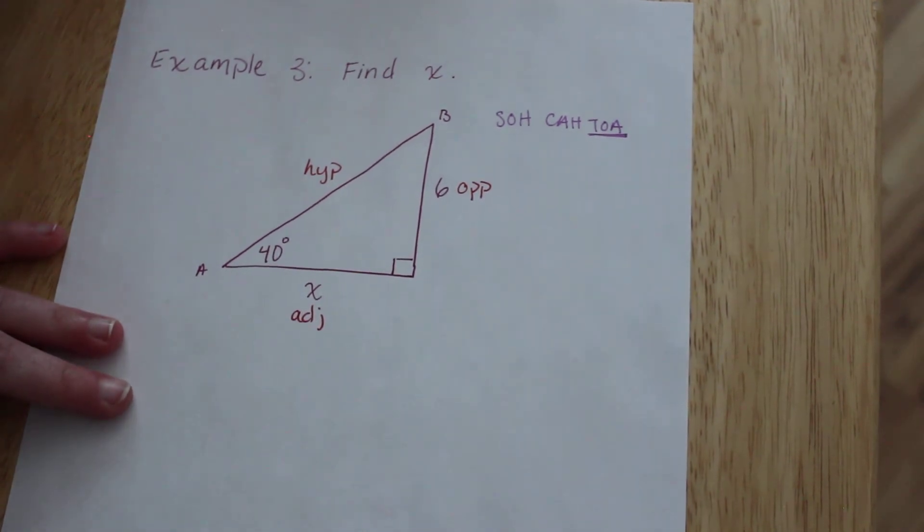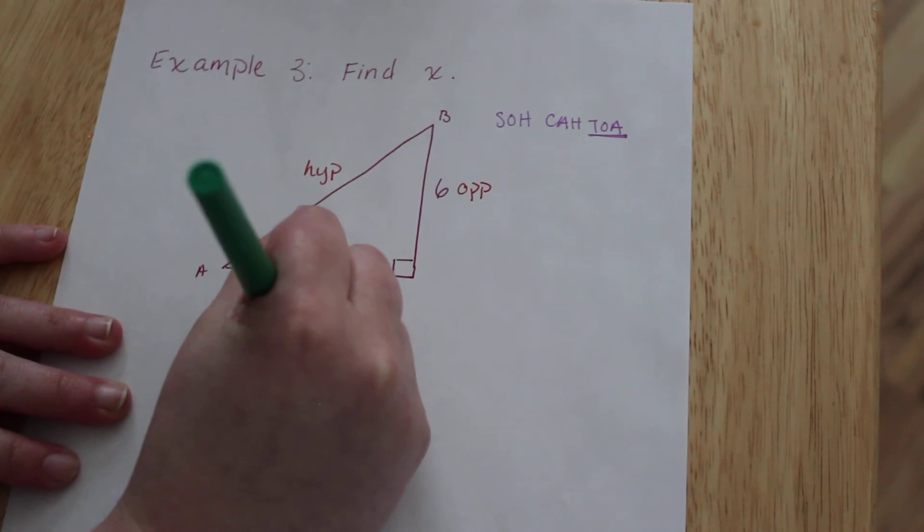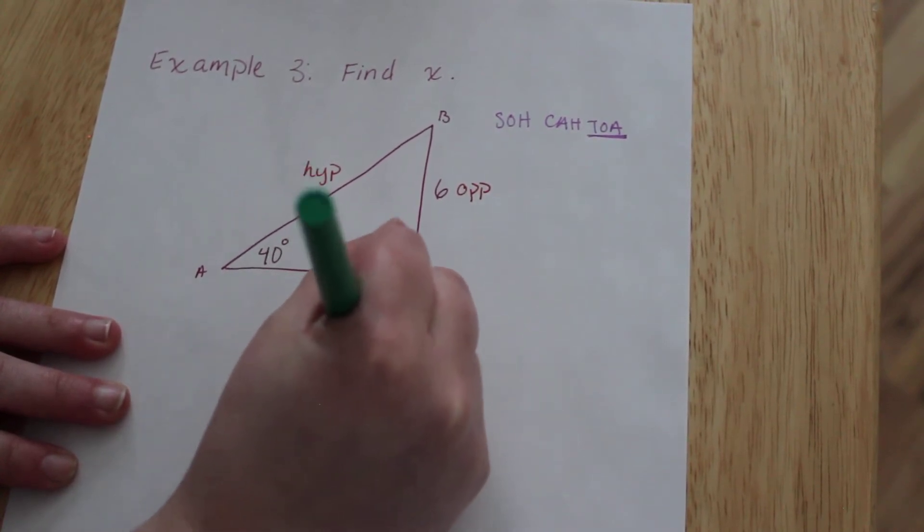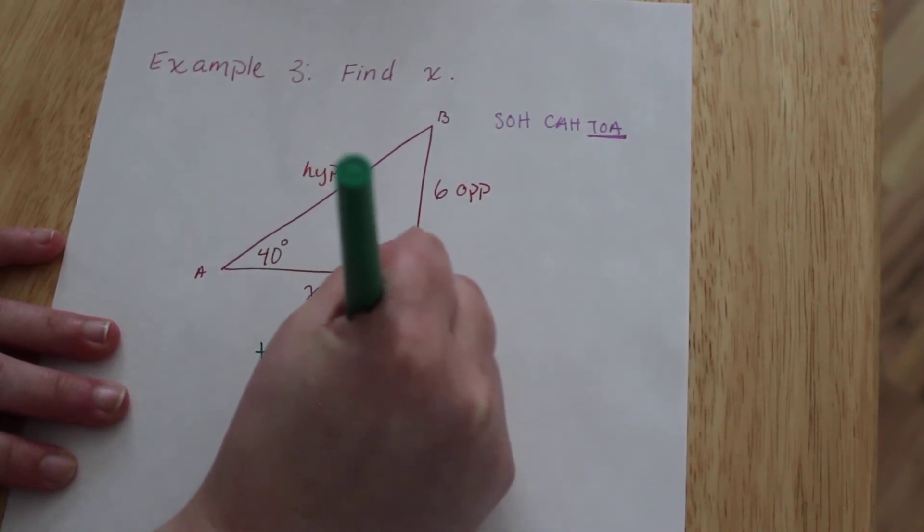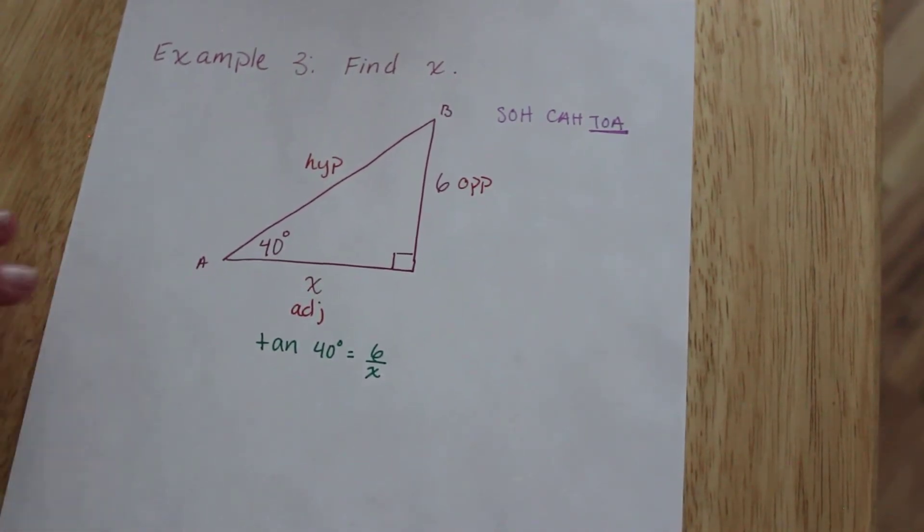So we need to use tangent. Let's set this up super quickly. Tangent of 40 degrees is going to equal 6 over x. Like I said, this is very similar to the last problem we did, but it is a little different. This time it's the denominator that has the x value.